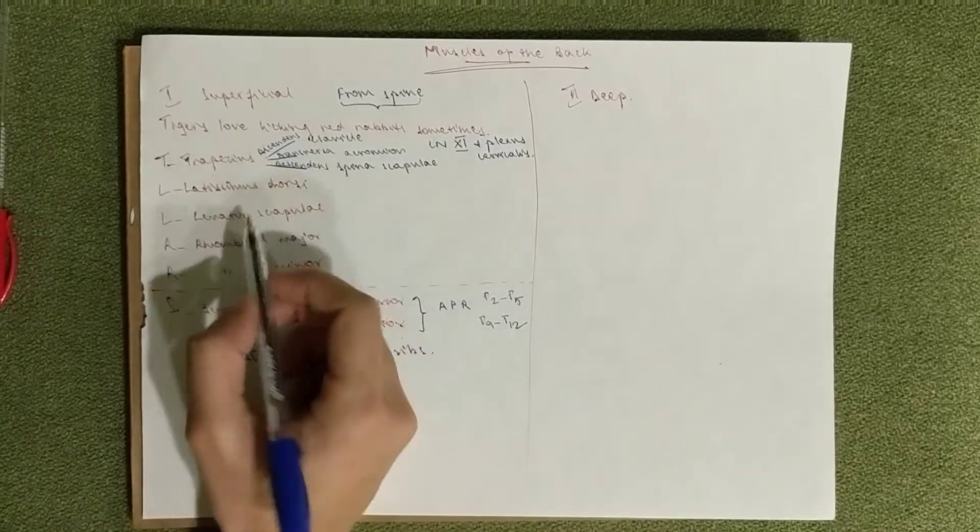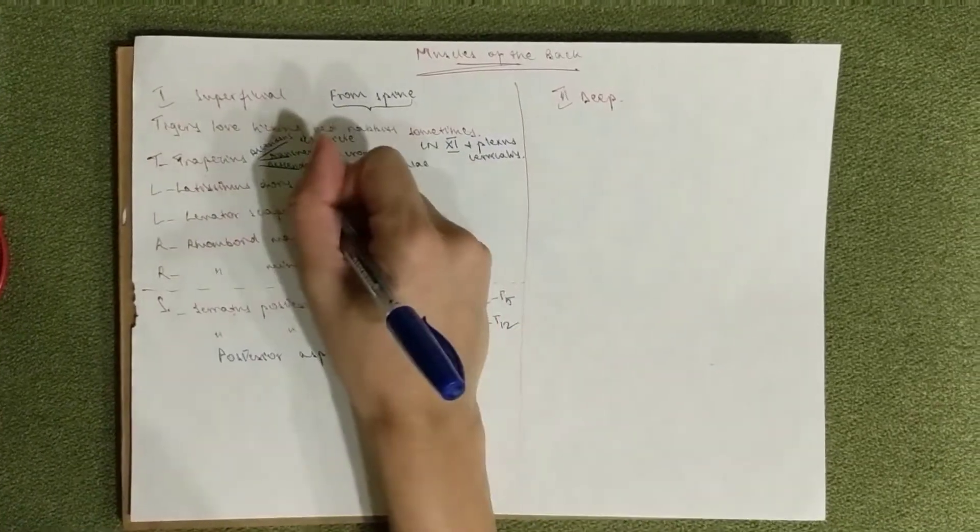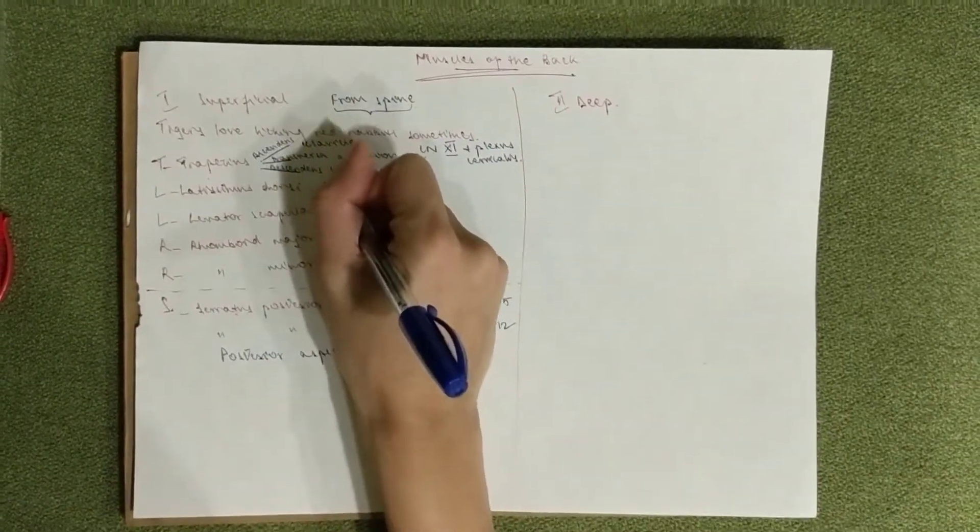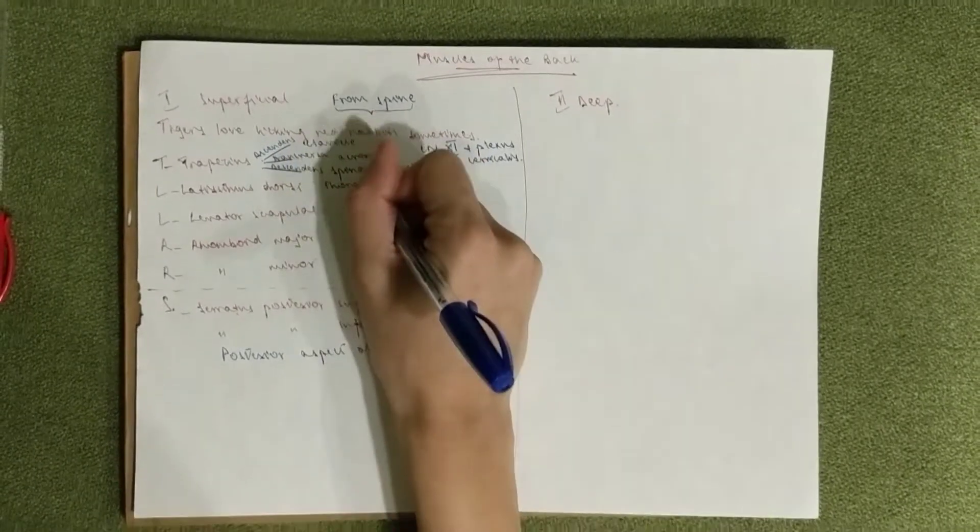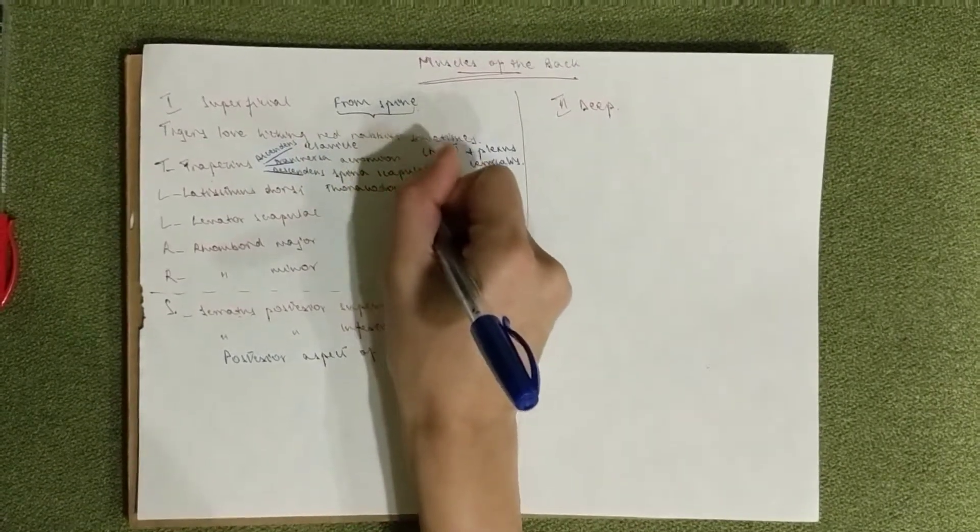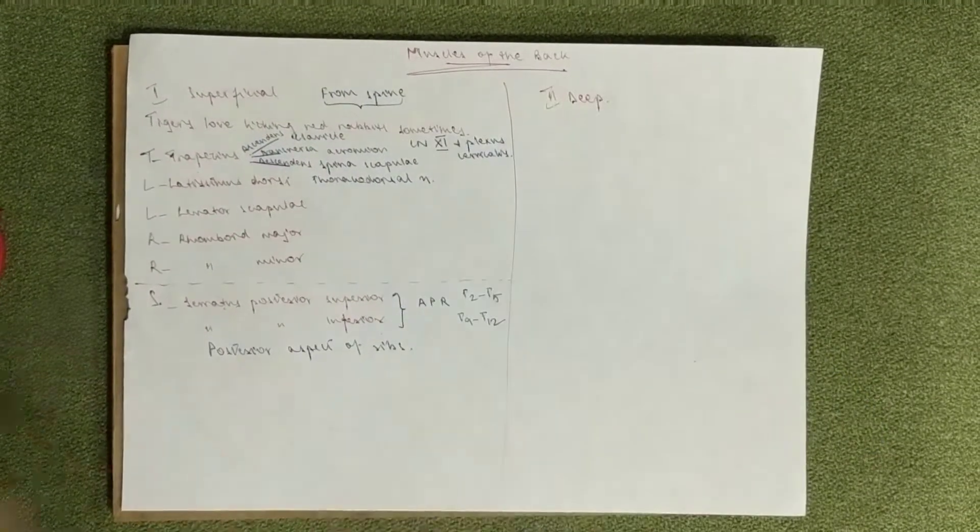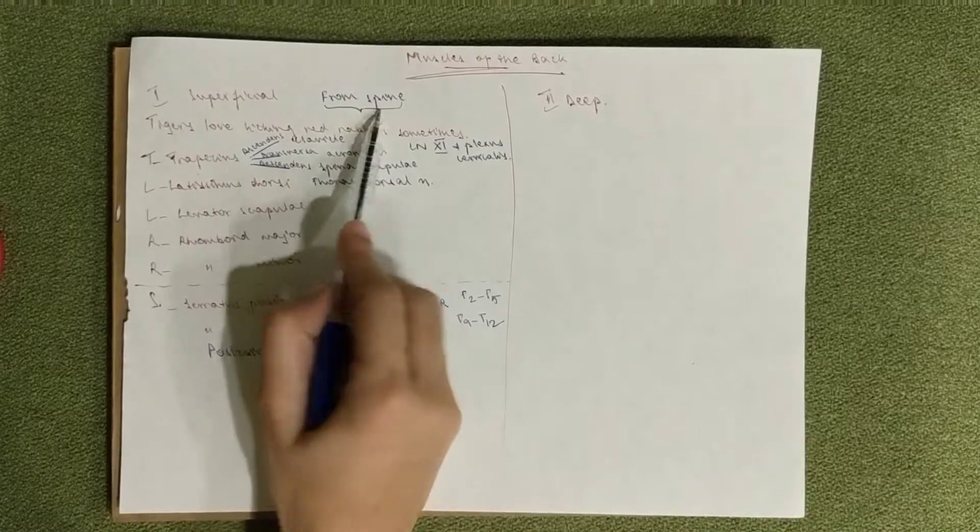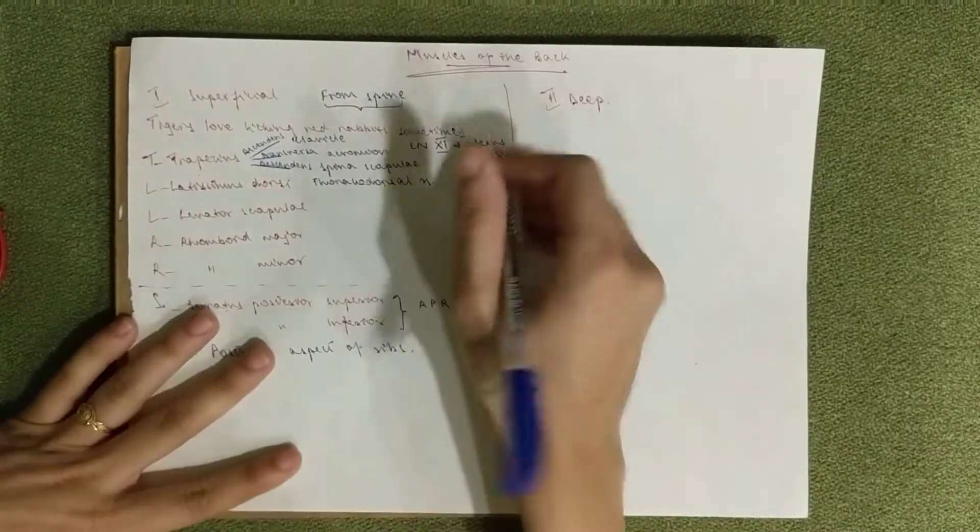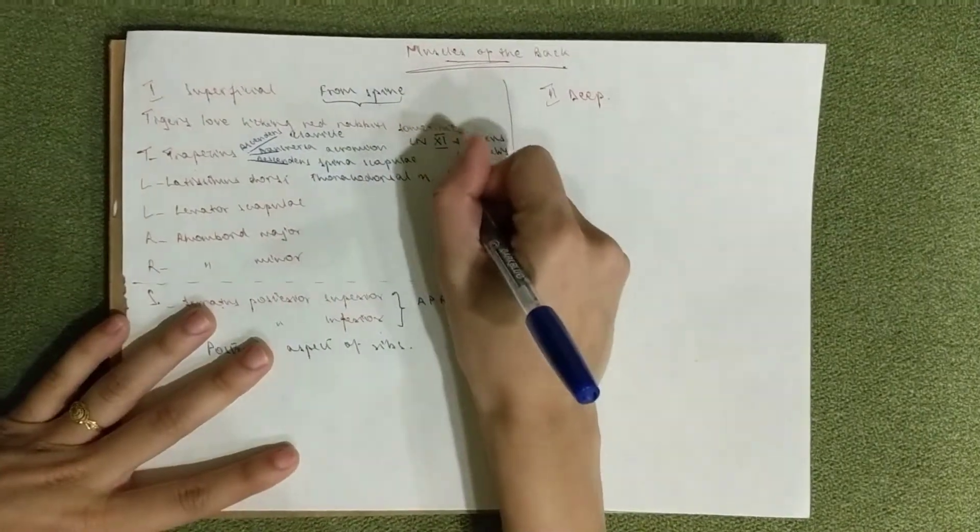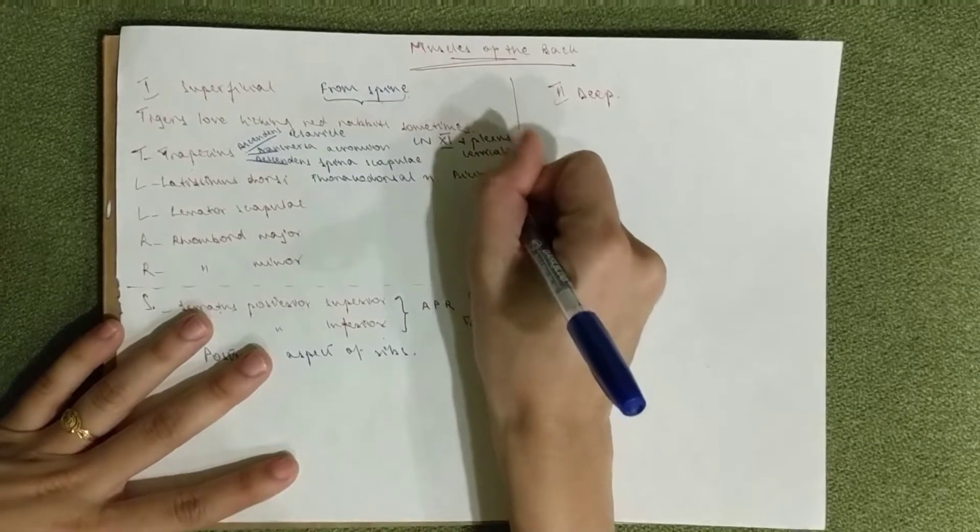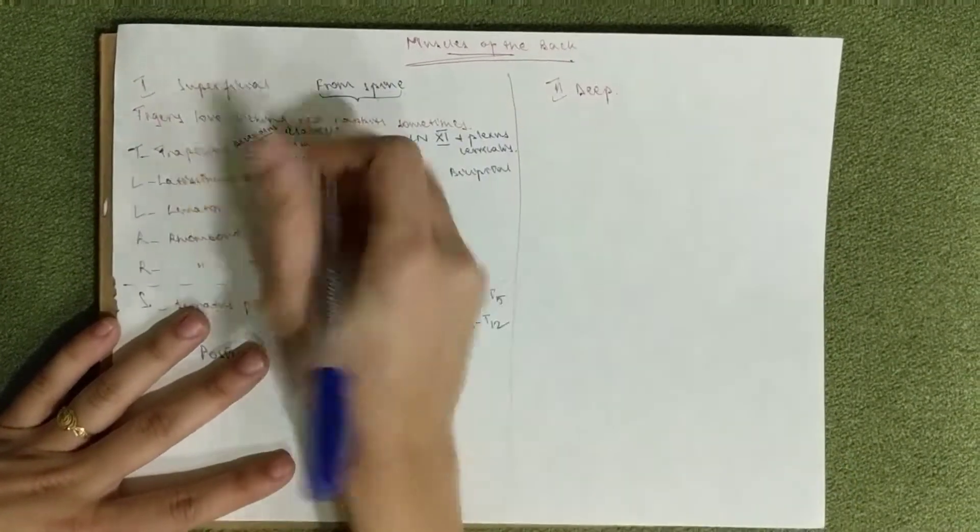The latissimus dorsi is innervated by the thoracodorsal nerve, which is from the brachial plexus C6, C7, and C8. It goes from the spine to the bicipital groove on the humerus.